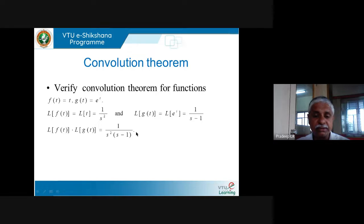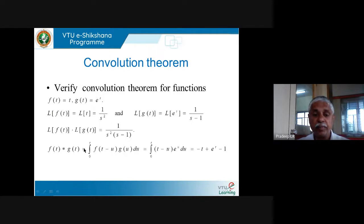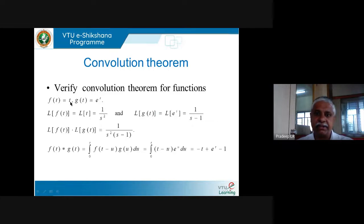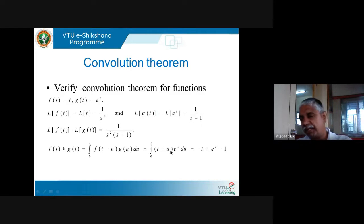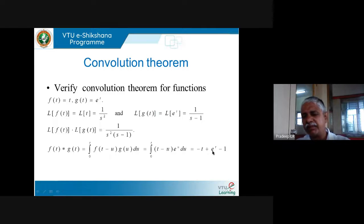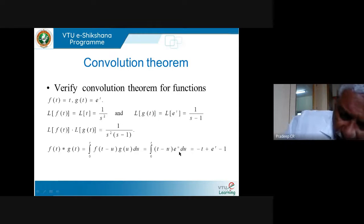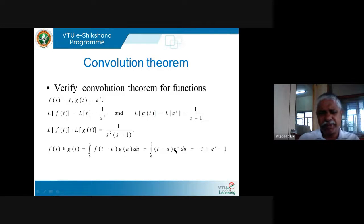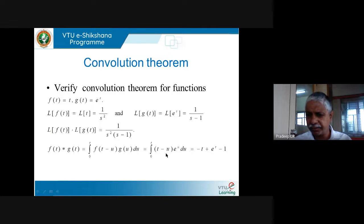Now I find f★g by definition: f★g(t) = ∫₀ᵗ f(t−u) · g(u) du. Since f(t) = t, f(t−u) = t−u. Since g(t) = e^t, g(u) = e^u. So I need to integrate (t−u) · e^u du from 0 to t. Treating t as a constant and using integration by parts, you will get the result: f★g(t) = e^t − t − 1. I won't write out every detail of the integration since you've done this before.